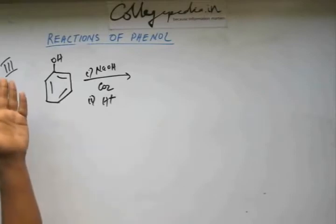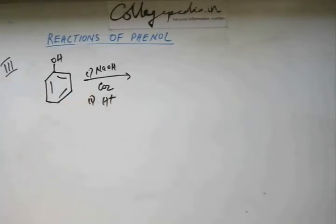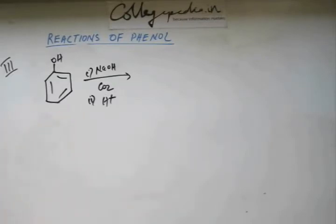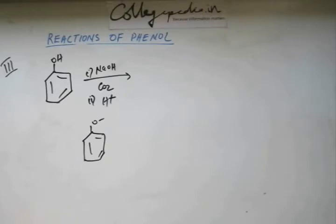One obvious thing is acid-base reaction. This is base, this is acid. The pKa of phenol is 10, it's not very acidic, it's weakly acidic but nevertheless it is sufficiently acidic to react with a strong base like NaOH. So there will be an acid-base reaction. And you'll have phenoxide ion like this after acid-base reaction is over.